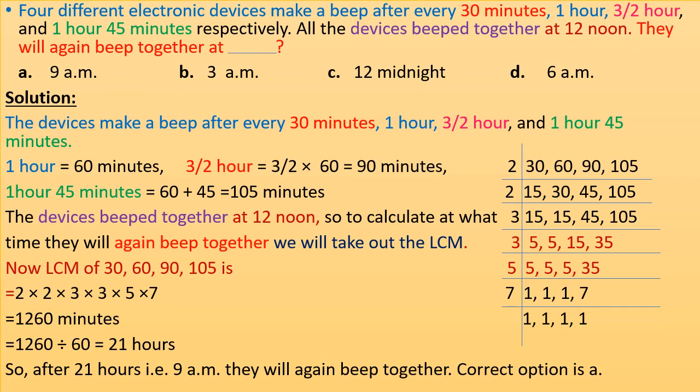The devices beeped together at 12 noon. To find when they will again beep together, we take the LCM of 30, 60, 90, and 105 minutes. The LCM is 1260 minutes. Converting to hours by dividing by 60, we get 21 hours. So after 21 hours, that is at 9 a.m., they will again beep together. Correct option is A.